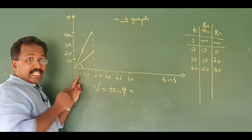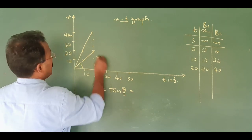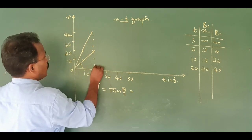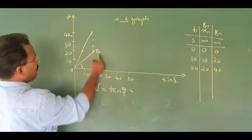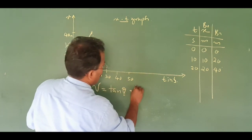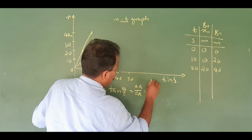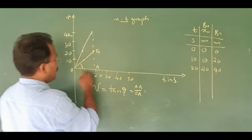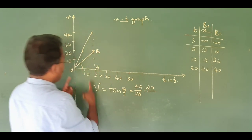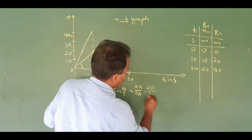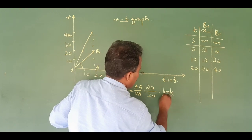Don't just measure theta and calculate tan θ directly. Instead, say the triangle is O, A, B. Tan θ equals AB divided by OA. Here AB is 20 and OA is 20, so the velocity is 1 meter per second.